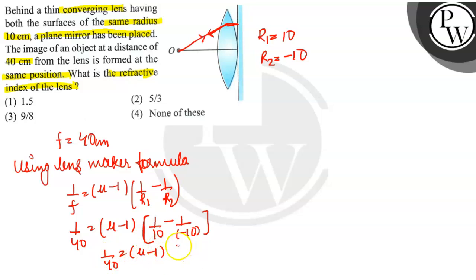2 by 10, so the 10s cancel and we solve for mu.